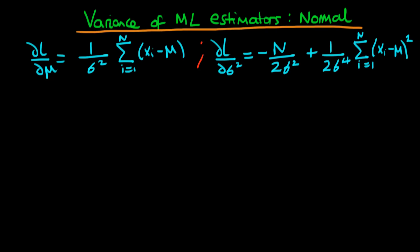In this video, we're going to be continuing our discussion as to how we derive the variance of maximum likelihood estimators in the circumstance when we're talking about a normal error in the population. In the last video, we spoke about how we wanted to calculate something called the information matrix, which we defined in terms of a parameter mu and a parameter sigma squared.